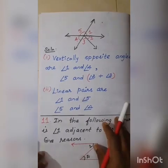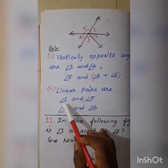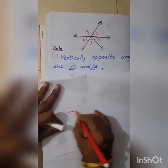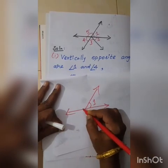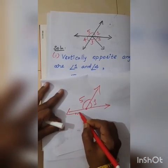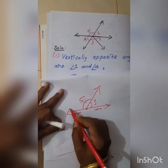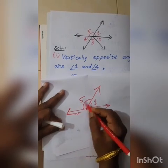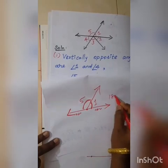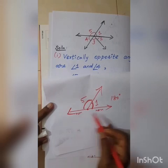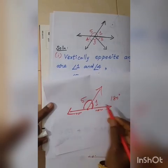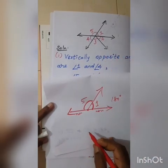Linear pair means two adjacent angles that make 180 degrees. The first linear pair answer is angle 1 and angle 5. Look at the figure — angle 1 and angle 5 share a common arm and common vertex. The non-common arms are opposite rays. They are adjacent angles. Angle 1 and angle 5 add to 180 degrees, and the non-common rays form one straight line. So angle 1 and angle 5 are a linear pair.